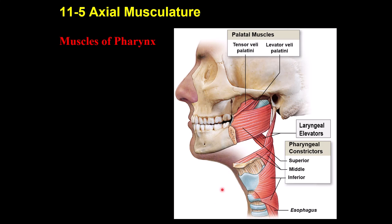For the pharynx and larynx, tensor veli palatini and levator veli palatini both cause elevation of the soft palate. Another muscle causes elevation of the larynx during swallowing. The three pharyngeal constrictors — superior, middle, and inferior — narrow the pharynx and are important for swallowing.